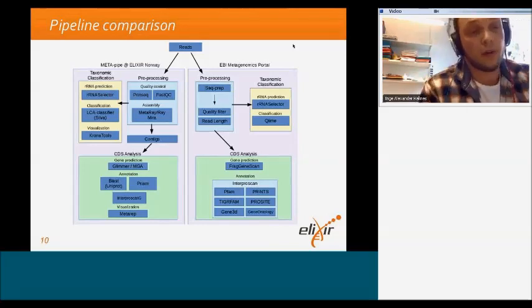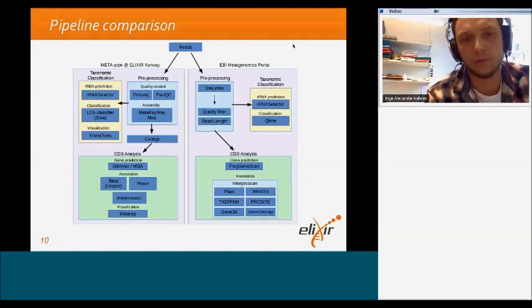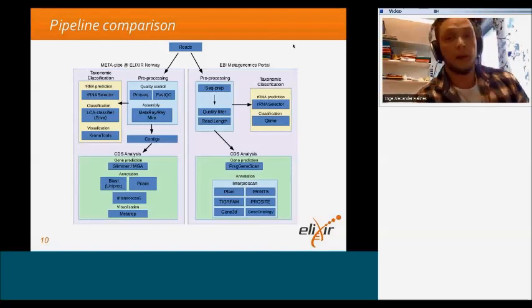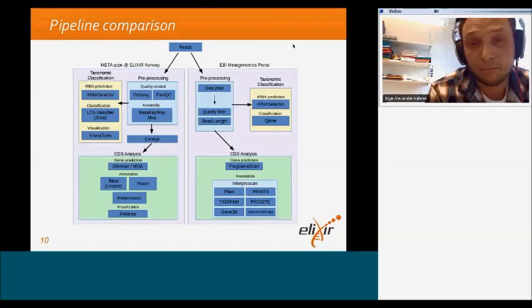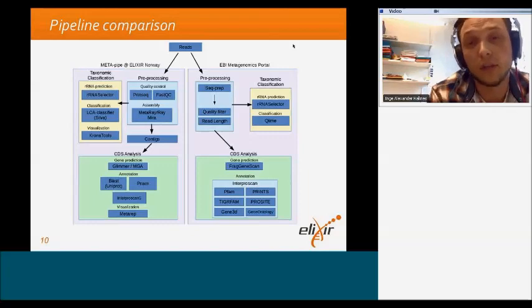On this slide you can see a more technical comparison. On the left is MetaPipe version 1, and on the right is the EBI Metagenomics Portal version 2, which came out in February. As you can see, the major components of these two pipelines are quite similar. Both contain a taxonomic classification part, they have pre-processing to quality filter the reads, and they have a CDS analysis or functional analysis.